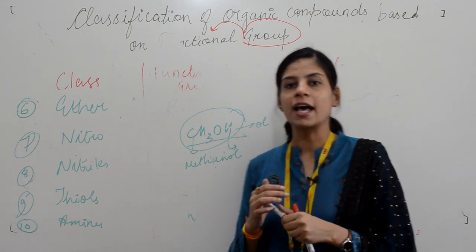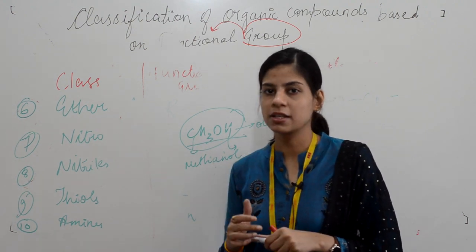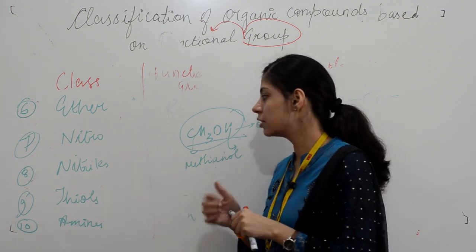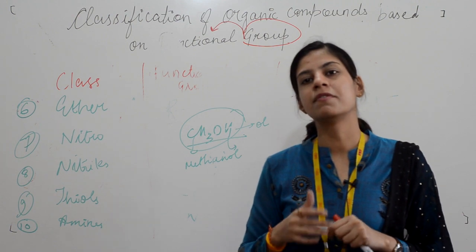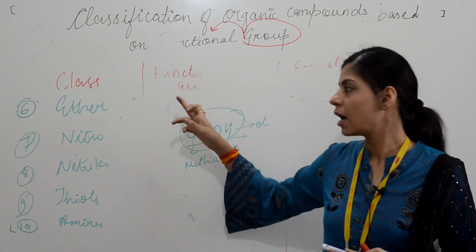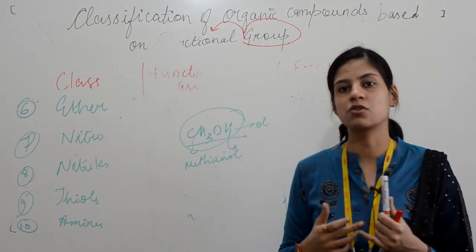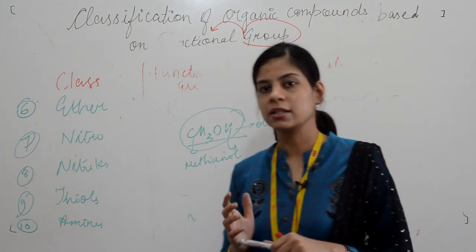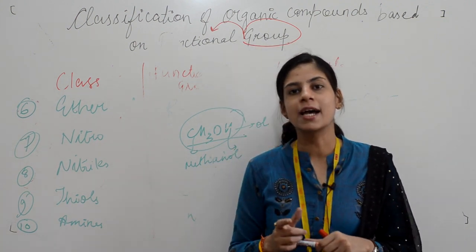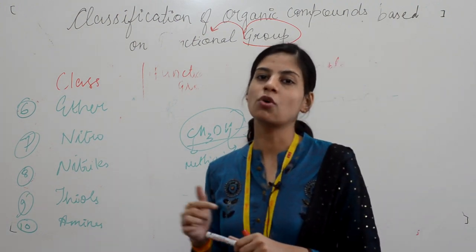Third, due to the presence of a large number of organic compounds, it is very easy to classify them into categories. We have categorized compounds into classes of alcohols, aldehydes, ketones, etc. The last point is that functional groups are the site of chemical reactions — whenever a functional group is present in a compound, the reaction will take place on that functional group.